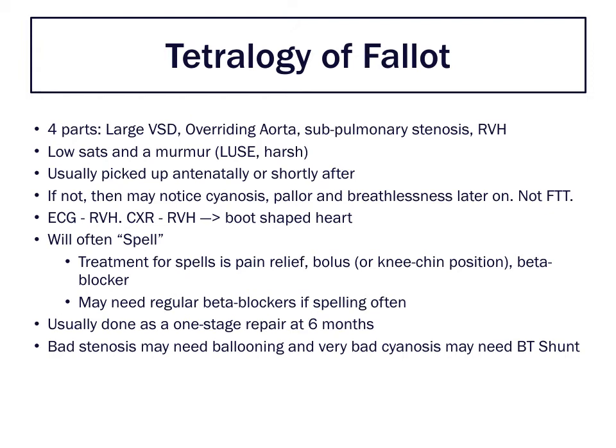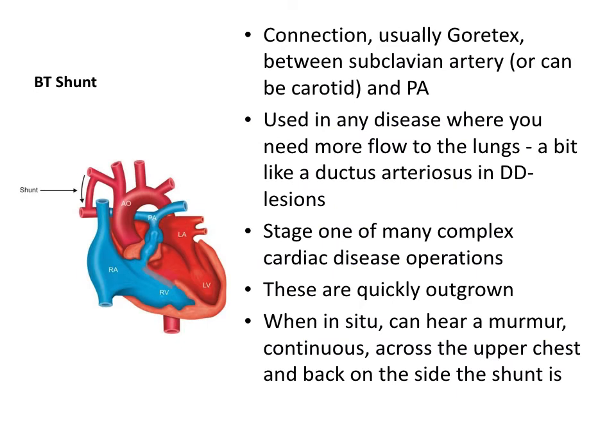If cyanosis is very bad with very little blood reaching the pulmonary circulation, a BT shunt is inserted - I'll discuss that on the next slide. The surgical repair itself involves two things simultaneously: closing the VSD, and in doing so attaching the new ventricular septum to the aorta to pull it across so all flow is left ventricular again. At the same time, the pulmonary stenosis is fixed by cutting muscular stenosis and repairing or replacing the valve if needed.